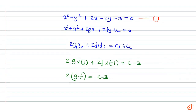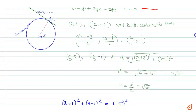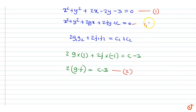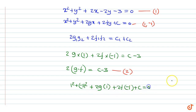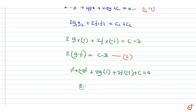Now, since this circle passes through (1, -1), we can write 1² + (-1)² + 2g(1) + 2f(-1) + c = 0, or we can write 2g - 2f = -c - 2. Let this be equation 3.